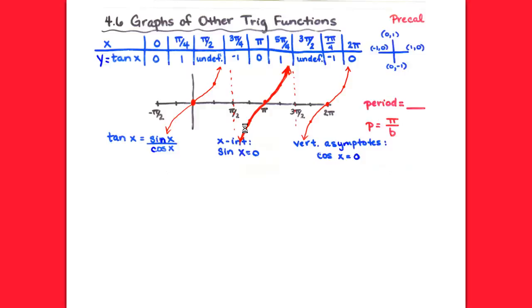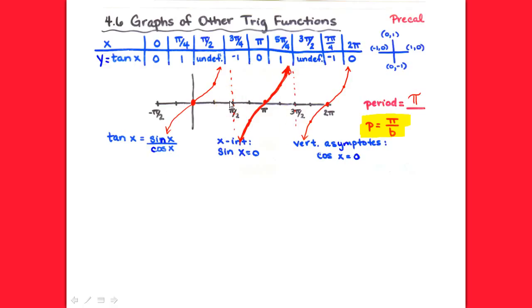Let's figure out what the period of tangent is. Pick any place on that tangent curve, then go to where it starts doing that exact same thing again. The distance between those two points is one π. So tangent has a period of π. Sine and cosine have a period of 2π, but tangent has a period of π. Whether you use the x-intercept or the asymptote as your reference point, the distance between repetitions is π.